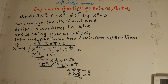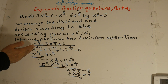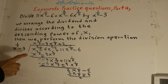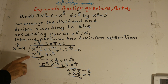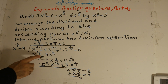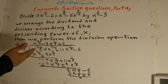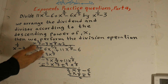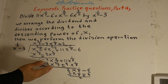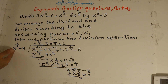We divide the first term x to the power of 3 over 5 by x to the power of 1 over 5. In division we subtract the powers: 3 over 5 minus 1 over 5 is 2 over 5, giving the first quotient term x to the power of 2 over 5. Then we multiply this with the divisor and change signs — negative to positive — this term cancels, and minus 6 plus 3 gives negative 3x to the power of 2 over 5. Then again we divide by x to the power of 1 over 5: 3 divided by 1 is negative 3.